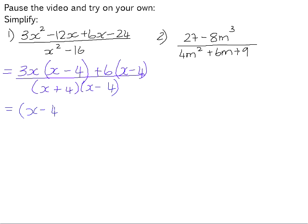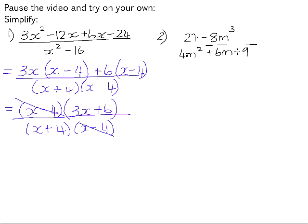We now have a common binomial to the two terms in the numerator. So we can take that out as a common factor. And now we can divide like factors by each other. So x minus 4 can divide by x minus 4. And our final answer, we are left with 3x plus 6 over x plus 4.